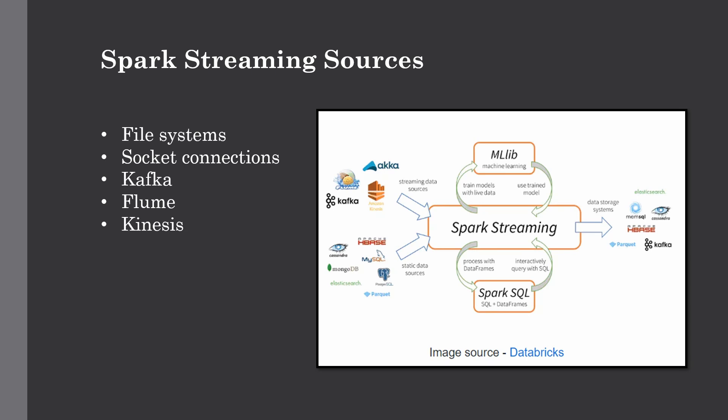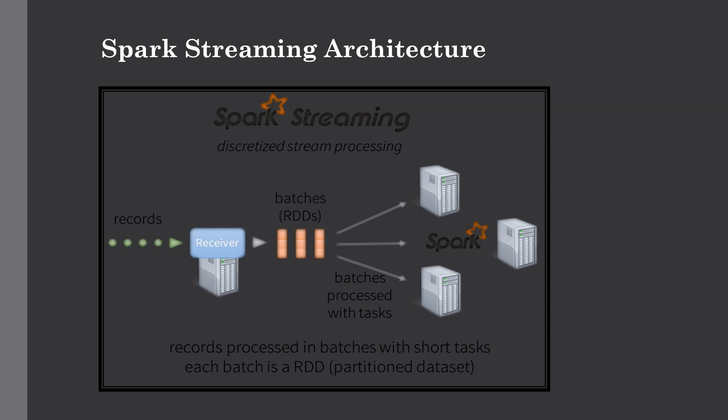Let's talk about some of the sources of Apache Spark Streaming. Every input DStream is associated with a receiver object which receives data from a source system. As you can see in this figure, Spark Streaming integrates with various streaming data sources — Flume, Kafka, Kinesis — and static data sources like HBase, Cassandra, MongoDB, PostgreSQL, etc. It can also get data from basic sources like file systems and socket connections, and can write data to destinations like Parquet, Kafka, HBase, Cassandra, and so on.